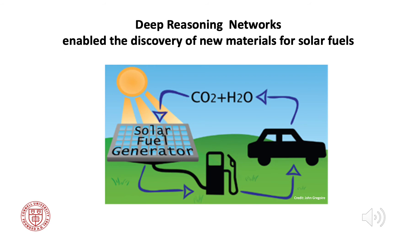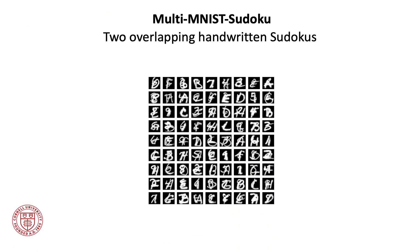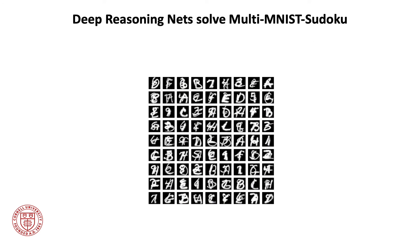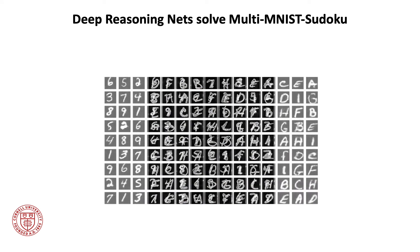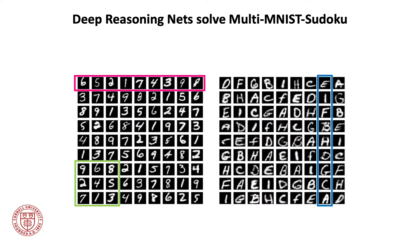To explain Deep Reasoning Networks, let's start with a simple example. A Multi-MNIST Sudoku is a set of two overlapping handwritten Sudokus. Can you demix this Multi-MNIST Sudoku? Deep Reasoning Nets, or DR Nets, solve Multi-MNIST Sudoku by combining deep learning with reasoning about the Sudoku rules to demix the Sudokus without requiring Sudoku examples to train on. In a Sudoku, a given digit or letter cannot be repeated in a row, column, or box, as illustrated by the colored boxes.